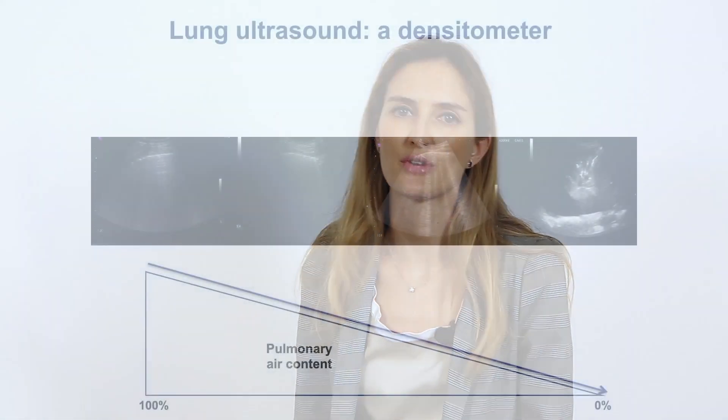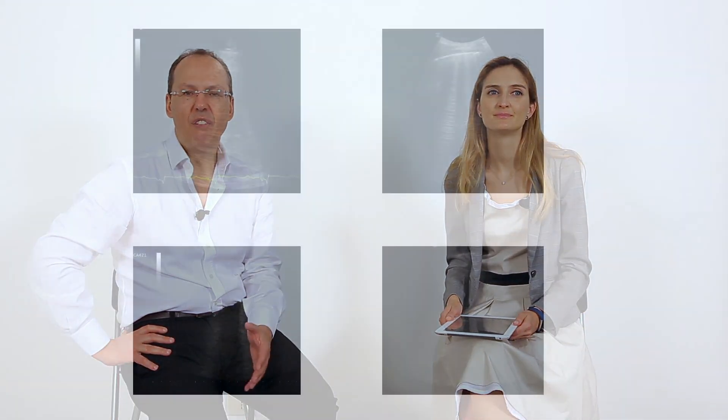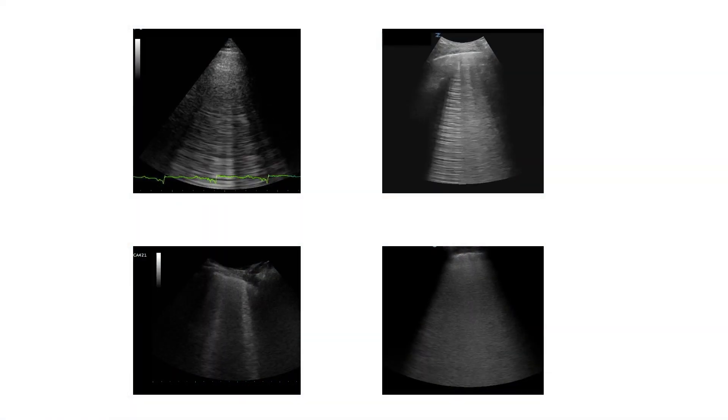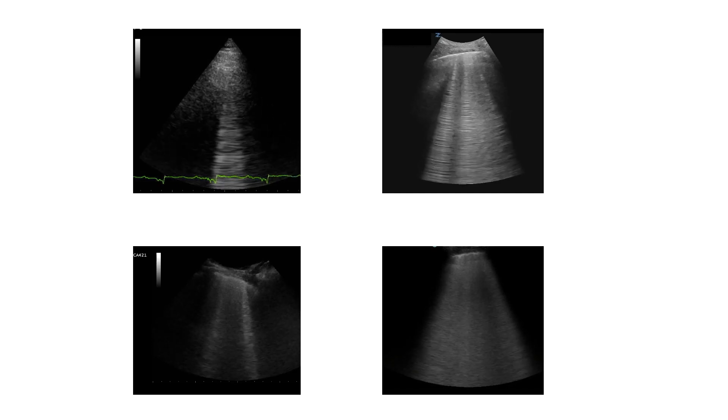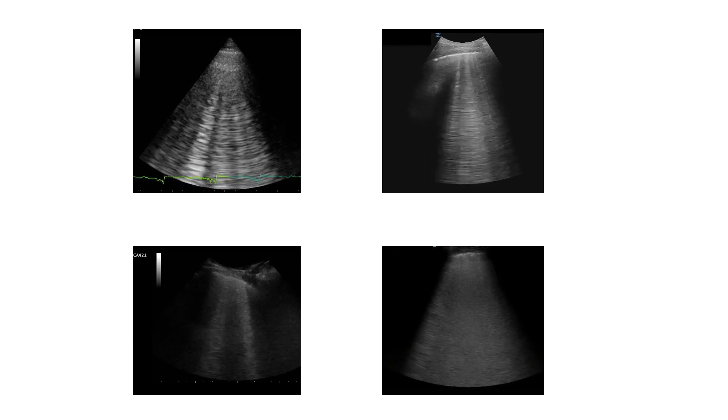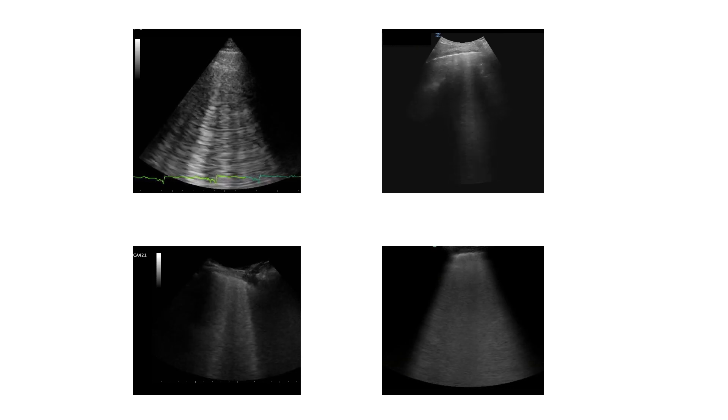We already know very well what B lines are. B lines are the sonographic sign of partial deaeration of the lung. Remember: more B lines, less air. So B lines are vertical, hyperechoic lines arising from the pleural line, moving synchronously with respiration and extending to the bottom of the screen.